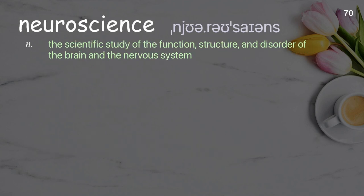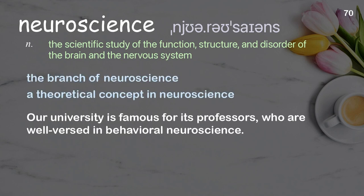Neuroscience: the scientific study of the function, structure, and disorder of the brain and the nervous system. Examples: the branch of neuroscience, a theoretical concept in neuroscience. Our university is famous for its professors who are well versed in behavioral neuroscience.